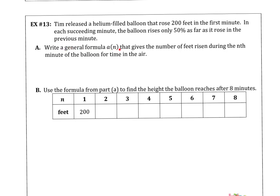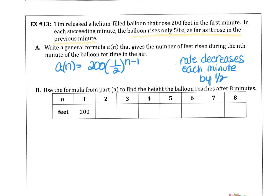We want to write a general formula, A of n, that gives the number of feet risen during the nth minute of the balloon for time that it spent in the air. So I think our key factor here is going to be that the balloon rises only 50% as far as it rose in the previous minute. So that tells us that the rate is decreasing each minute by a half. The A sub n or A of n term would be 200 to start and 1 half to the n minus 1 power.